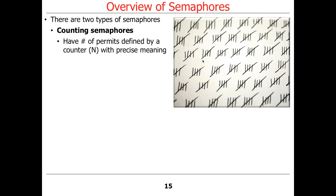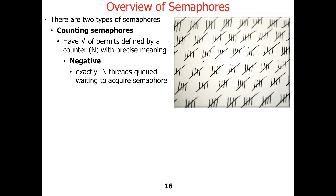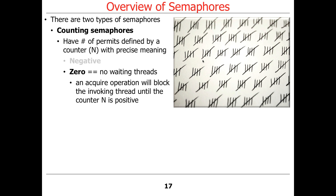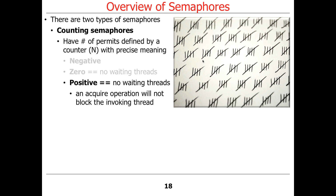There are two types of semaphores. One type is counting semaphores, which have a number of permits defined by a counter, n, with specific semantics. If the value is negative, that many threads are queued up waiting to acquire the semaphore. If the value is zero, there are no waiting threads, but the acquire operation will block the invoking thread until the counter n is positive — there are no resources available. If the count is positive, there are no waiting threads, and the acquire operation will decrement it by one and keep going.